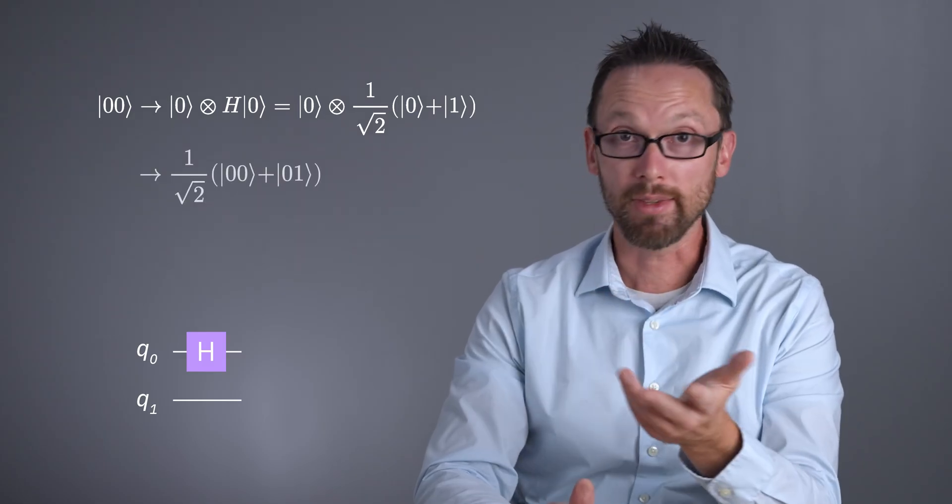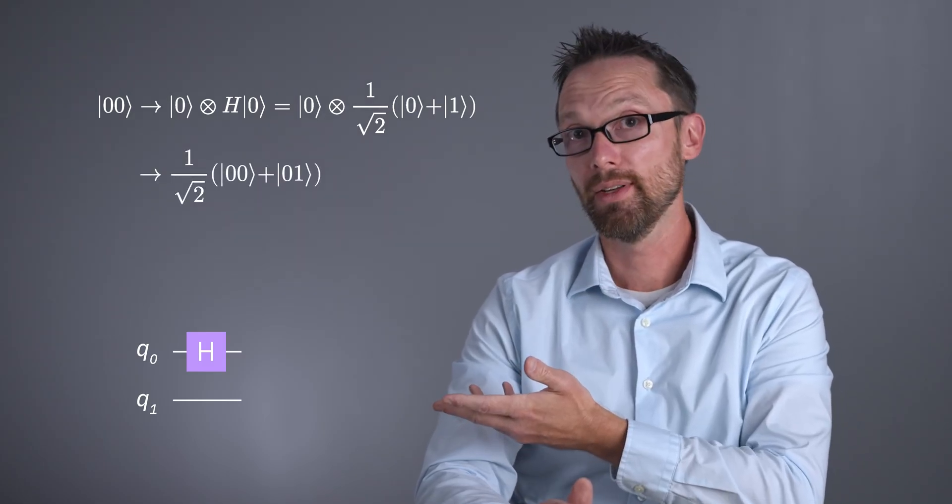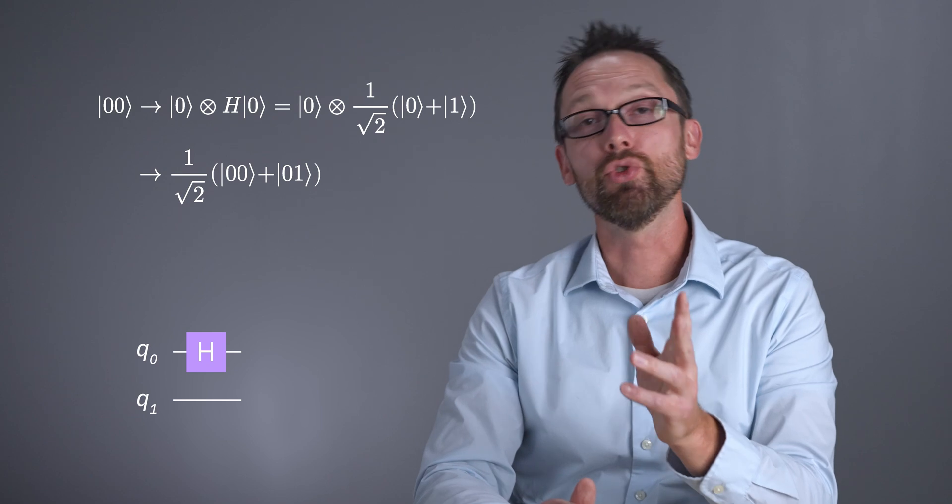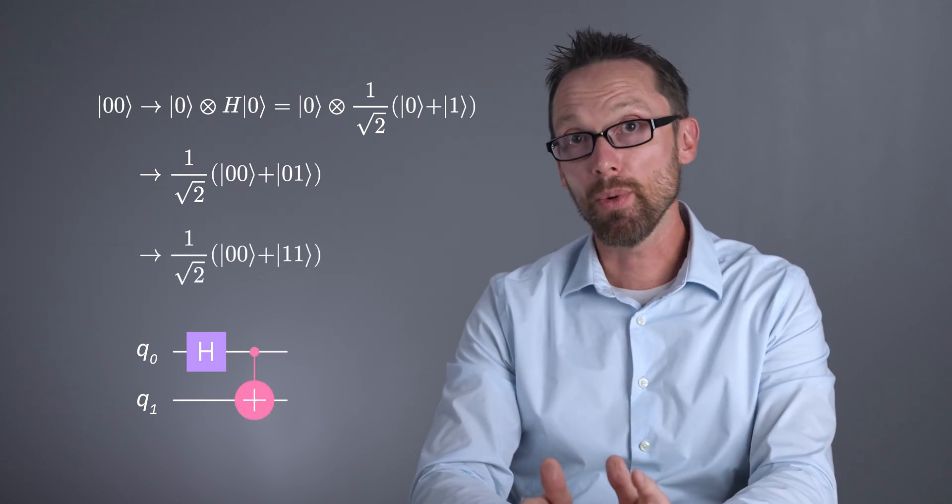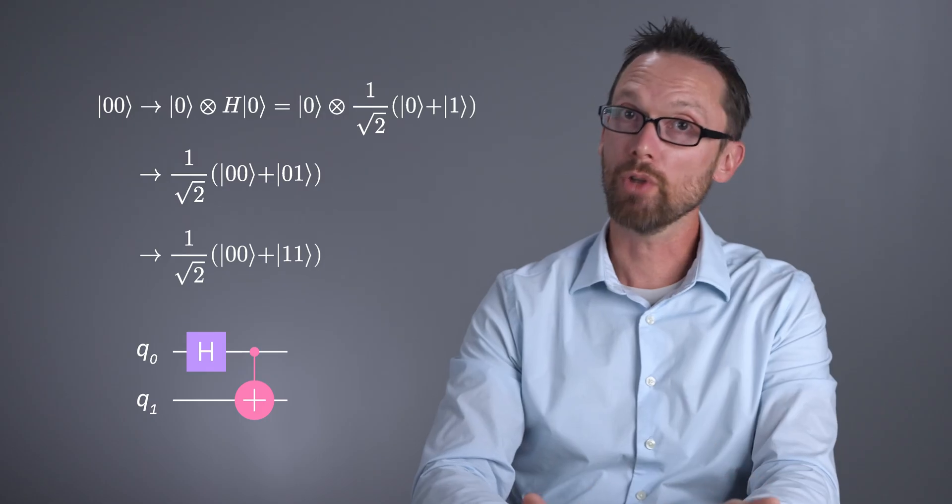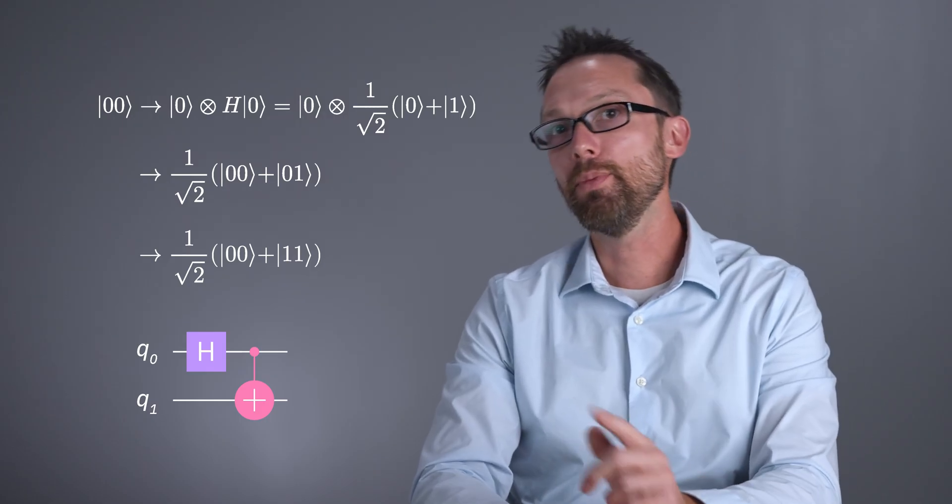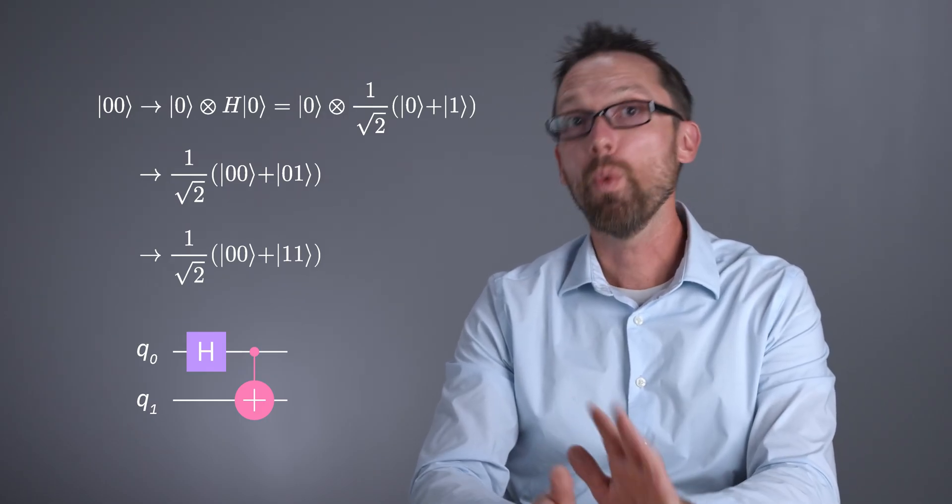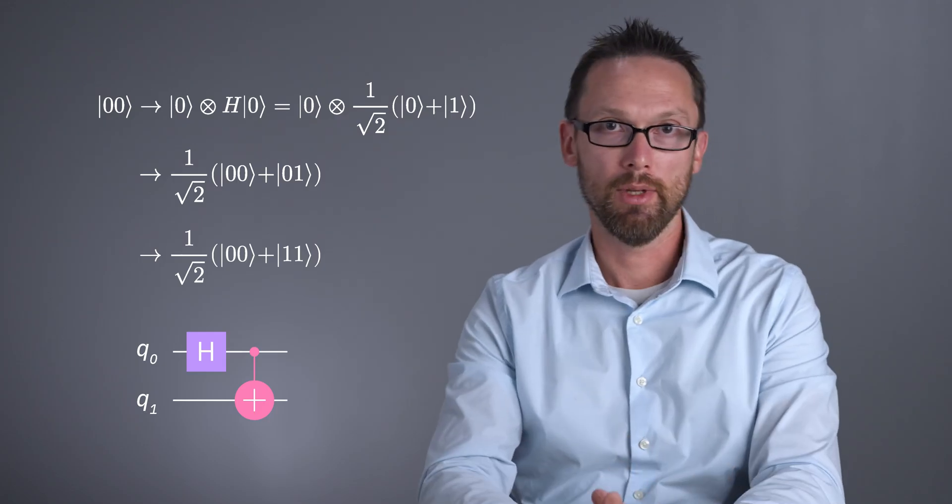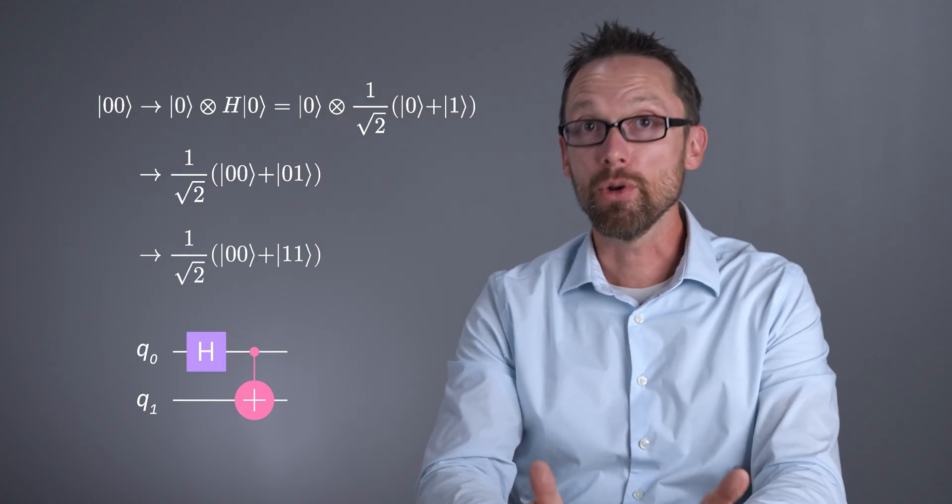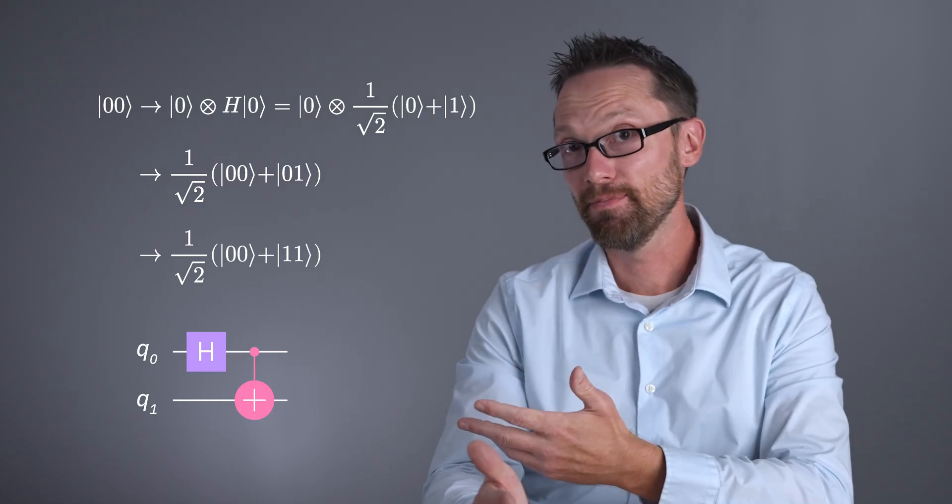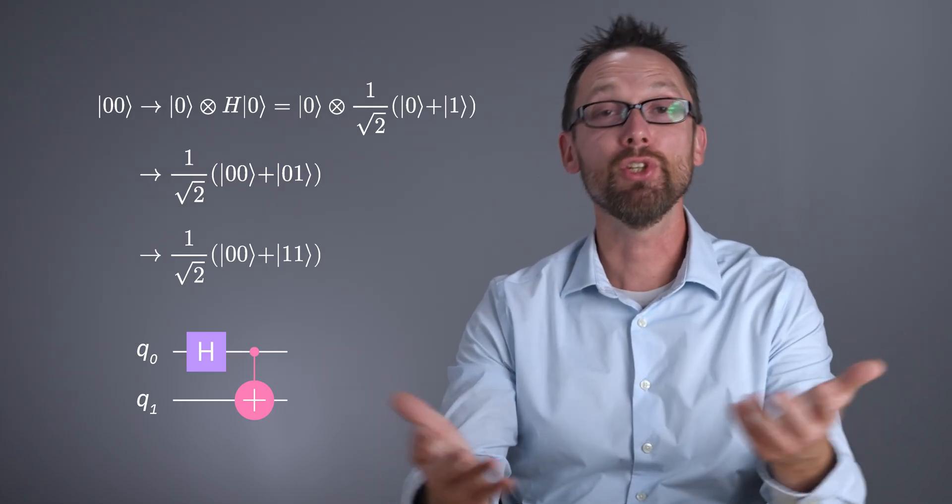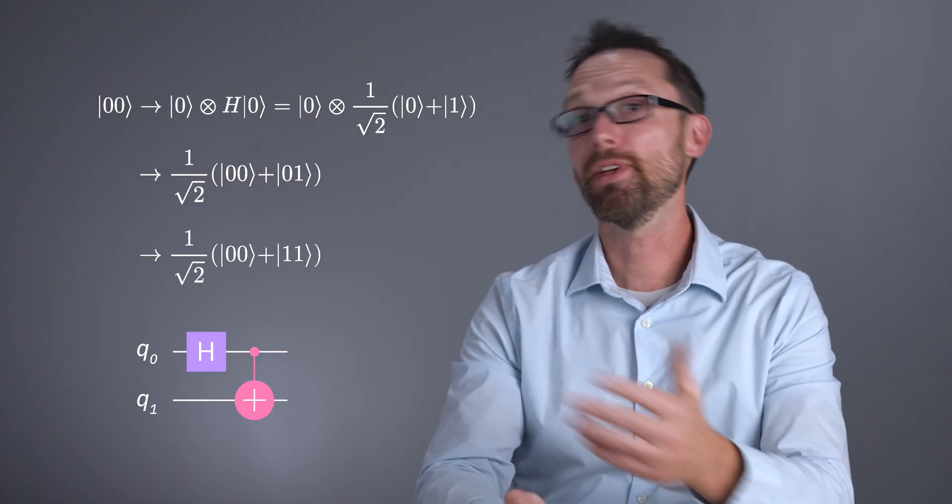A Hadamard gate on qubit 0 will put it in a superposition state like this. We're free to rewrite this like this. And now if we apply a controlled-NOT or CNOT gate using qubit 0 as the control and qubit 1 as the target, then whenever qubit 0 is in the 1 state, we flip the state of the other qubit. And when qubit 0 is in the 0 state, we do nothing. This gives us this state. And congratulations, you've just made a Bell state, specifically phi plus.